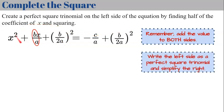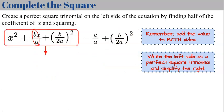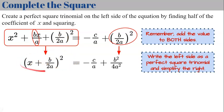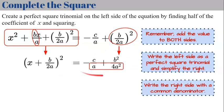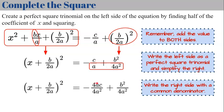We write the left side as a perfect square trinomial: x plus b over 2a, all squared. On the right side, we square b over 2a to get b squared over 4a squared. To combine the right side with a common denominator, we multiply negative c over a by 4a over 4a, giving 4a times c over 4a squared as a common denominator.